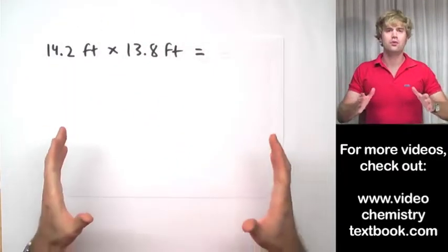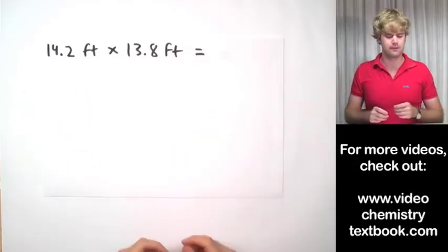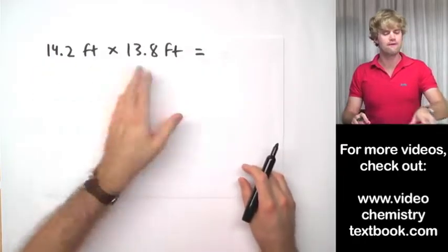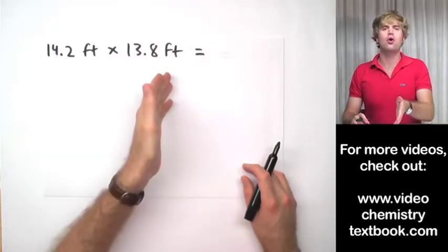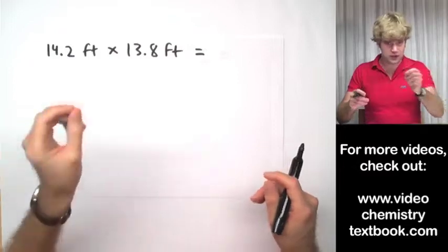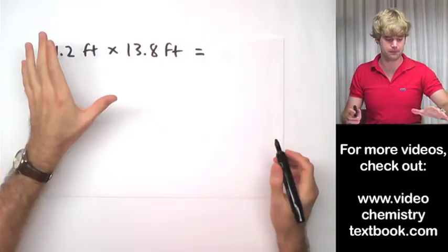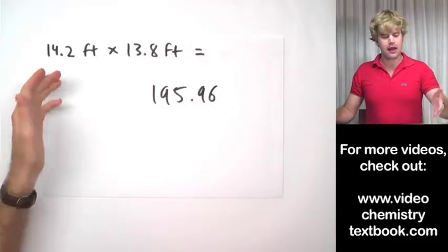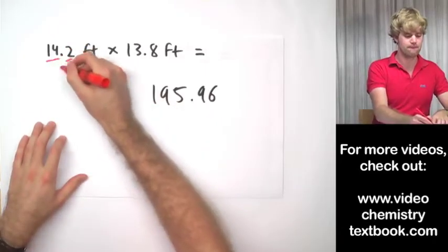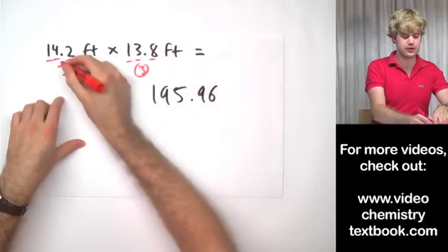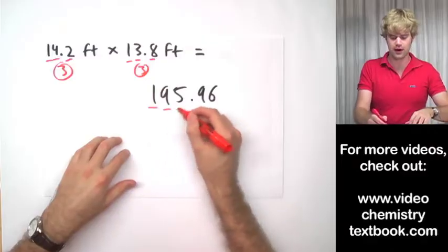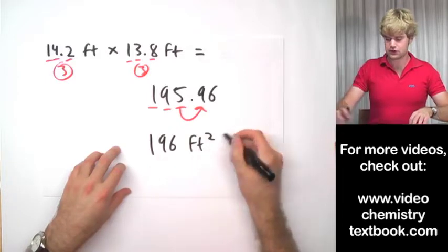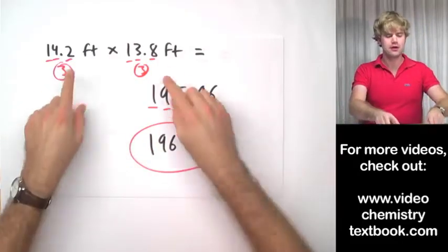Let's say we want to calculate the area of a room — maybe to find out how much carpet to buy. We measure the length and the width, and we get two numbers, both in feet. Are these measurements or counting numbers? These are measurements because we had to use a ruler or yardstick to actually measure. So when we do this math we get 195.96, and since these are measurements we use significant figures rules. There are three significant figures in each number, so we round the final answer to three significant figures: 196 square feet.